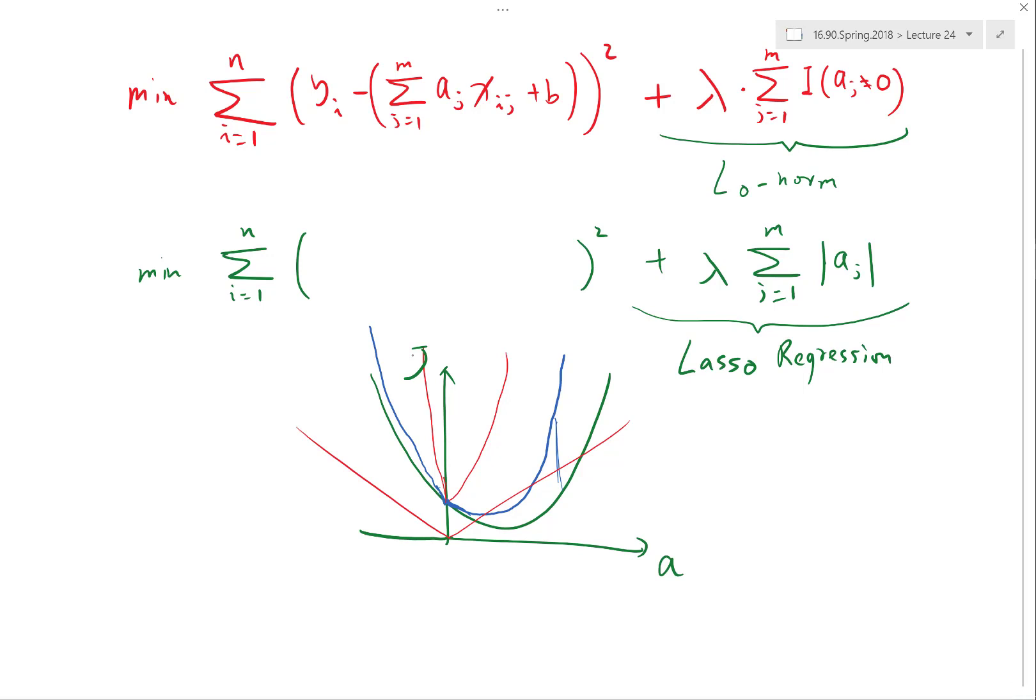But still, the lasso regression problem is not exactly easy to solve, and the specialized algorithms usually work only if the first part of the objective function is quadratic. If you do something not linear regression, which means your first part of this objective function is usually not quadratic, then these specialized algorithms don't work. And if you add this lasso penalization onto the objective function, it becomes an objective function that is very hard to optimize.